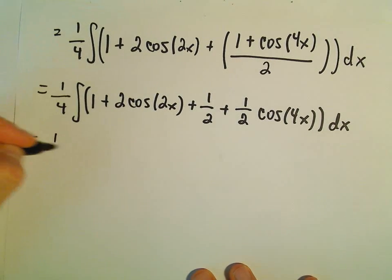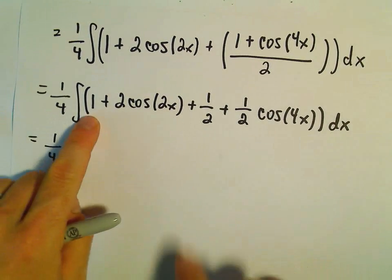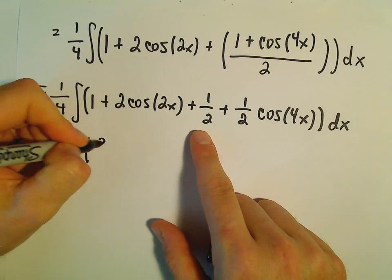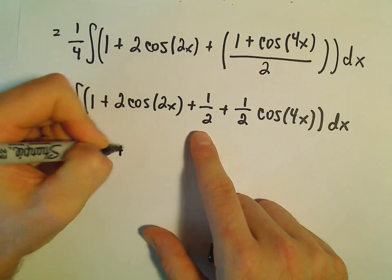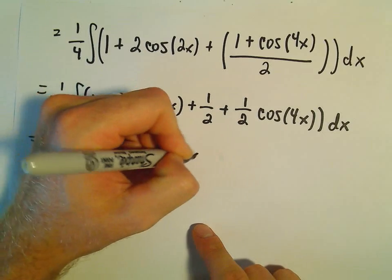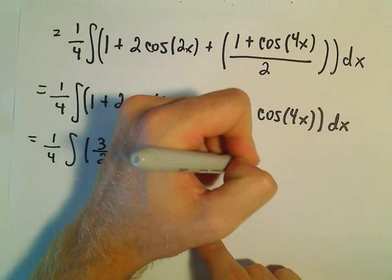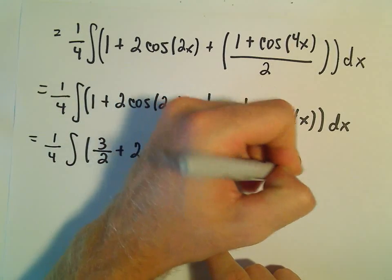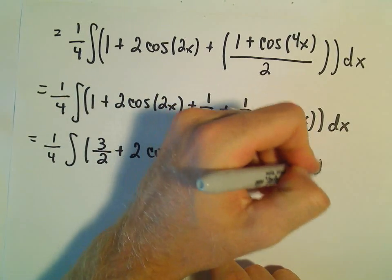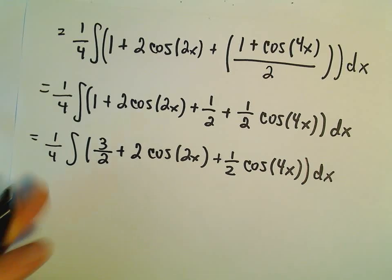Okay, so I'm going to keep simplifying here. We've got 1 plus 1 half, which is going to be 3 over 2. So 3 over 2 plus 2 cosine of 2x plus 1 half cosine of 4x. And now we're in a good position. We can actually integrate all of these functions.